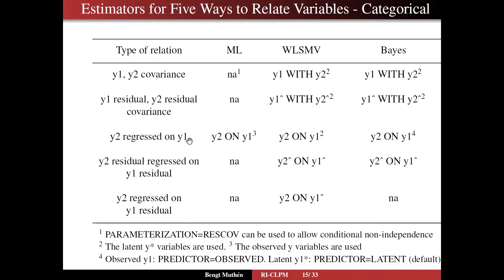For y2 regressed on y1, well for ML, that means that we use the observed y variables, so it's the observed y1 that predicts the observed y2. Whereas for WSMV and for Bayes, well for WSMV, it is the latent y-star variable that's the predictor here, not the observed. And for Bayes, you have the choice actually, this y1 can be observed or latent, depending on how you specify predictor as observed or as latent.